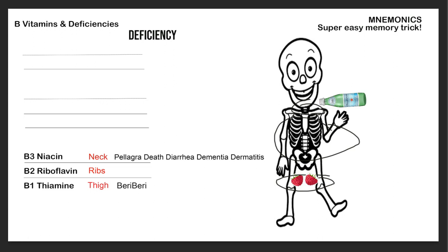Pellagra involves inflamed skin, sores in the mouth, skin darkening or stiffening, and peeling — probably in the lower legs, ankles, and heels. So one, two, three is pretty easy to remember in order.